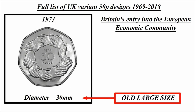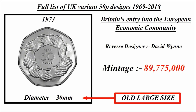1973: this coin has a diameter of 30 millimetres, which is the old large size coin you will no longer find in circulation. It commemorates Britain's entry into the European Economic Community. The reverse designer is David Wynne and the mintage figure was 89,775,000.